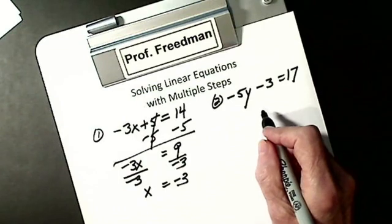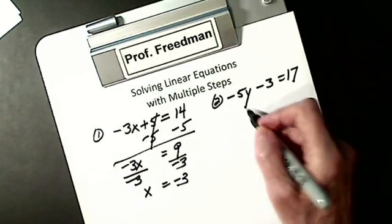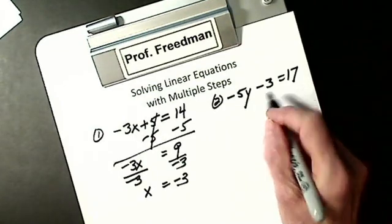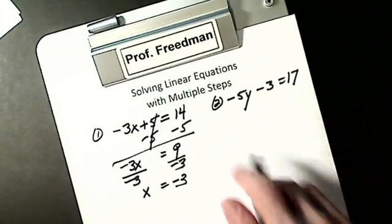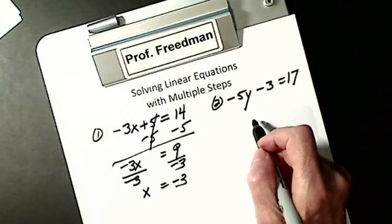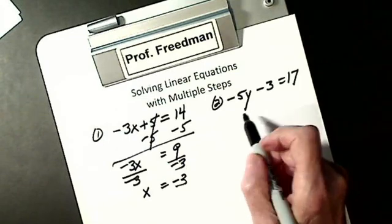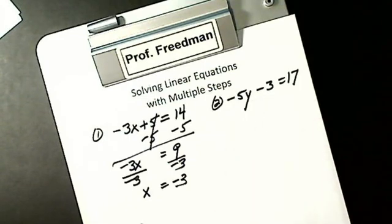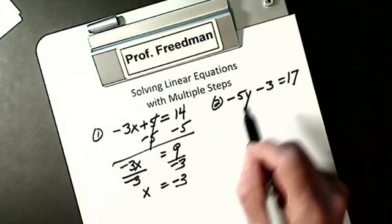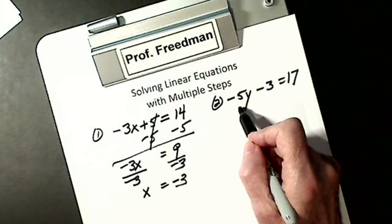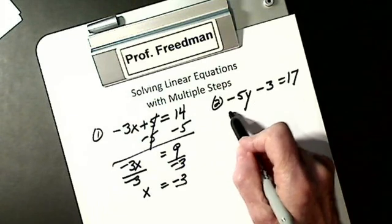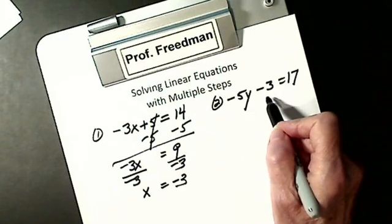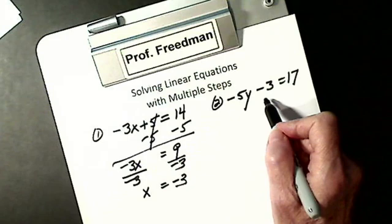For this one, I want Y alone. Y is not alone. I work on the side of the Y. I have a negative 5 and a negative 3.